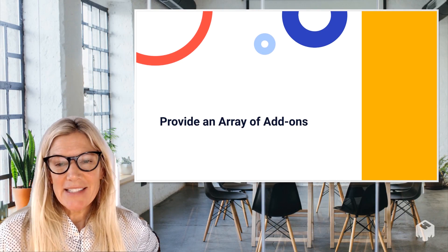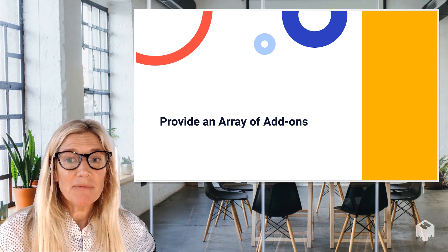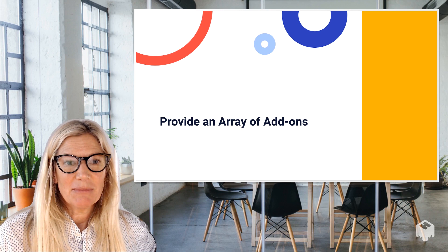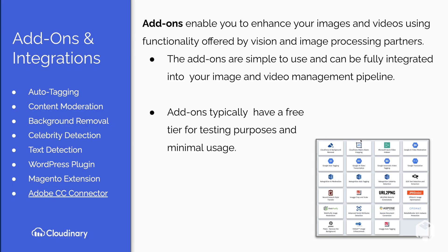When working with content, anything you can do to automate results gives you more time to figure out what you want to do next. Not only should your DAM adapt to your tech stack, it should provide add-ons that enhance your media and make automation easier. Add-ons enable you to enhance your images and videos using functionality offered by vision and image processing partners, and are simple to use with full integration into your management pipeline — typically with a free tier for testing.